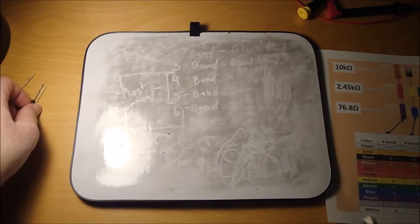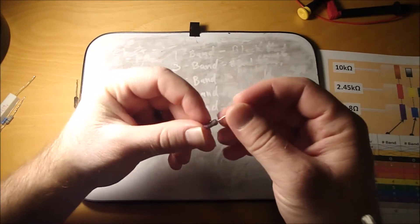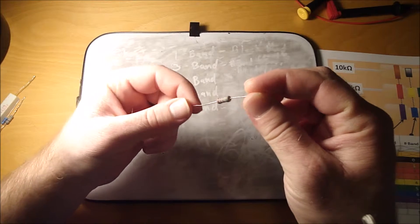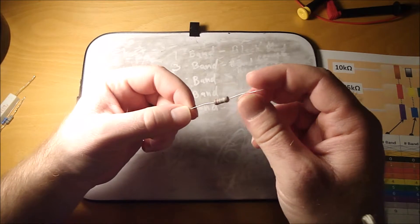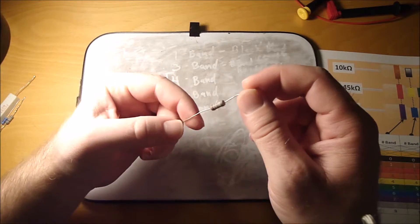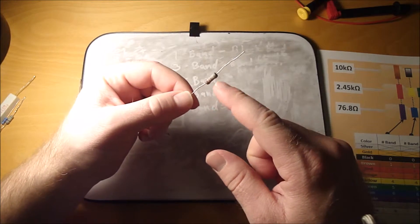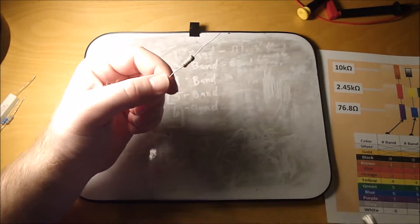Alright, so let's learn about resistors and how to decode the color bands that are on them. The color bands show what the resistance value is of the resistors.